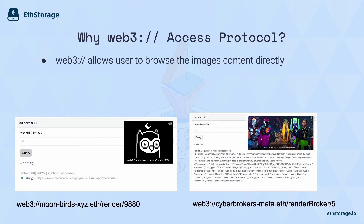Even if they have all the data on-chain, it's quite counter-intuitive, because we have Ethereum and all the data — why not just use Ethereum to render all these resources directly? That is the original motivation we developed the Web3 access protocol, which allows users to browse these images or any web content directly on Ethereum smart contracts. Here are live examples: if you type this URL in Firefox with our extension, you can directly browse all these images on Ethereum.